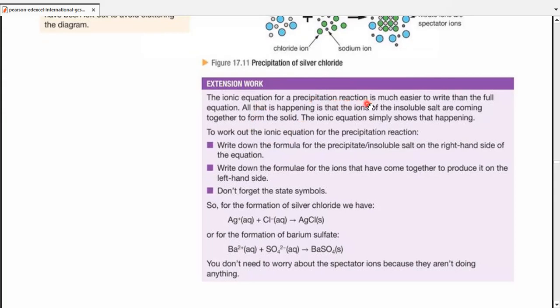An ionic equation for a precipitation reaction is much easier to write than the full equation. All that is happening is the ions of insoluble salt are coming together to form the solid. We write down the formula of the precipitate on the right-hand side of the equation and simply write the ions that would react together to form it. For example, we know that silver chloride is the precipitate, hence the solid sign. You're simply supposed to react silver ions with chloride ions. Silver ions in aqueous form plus chloride ions in aqueous form give us the silver chloride precipitate, the solid one.